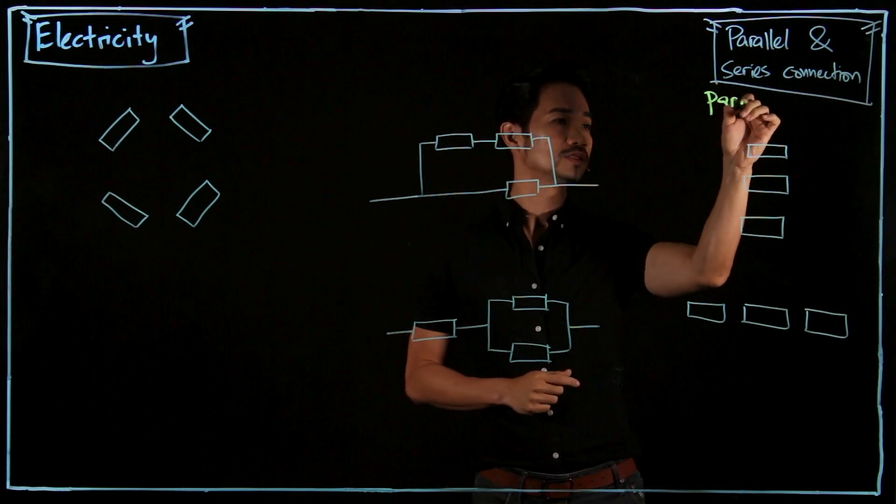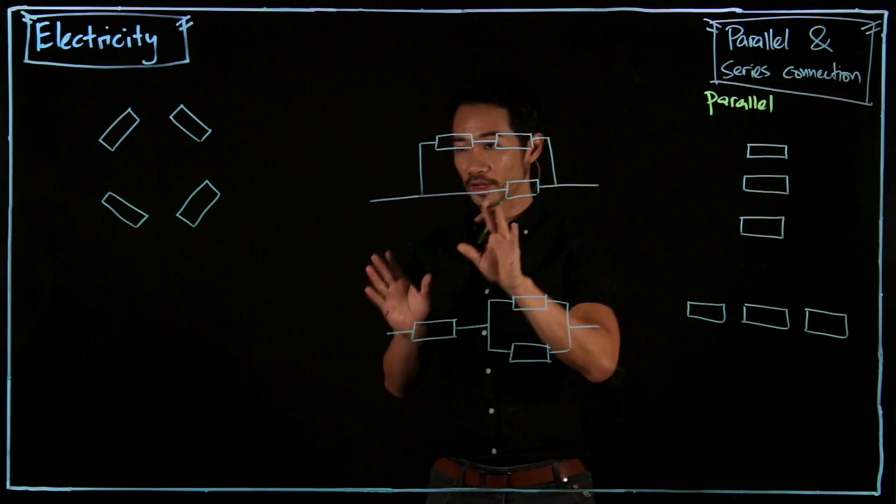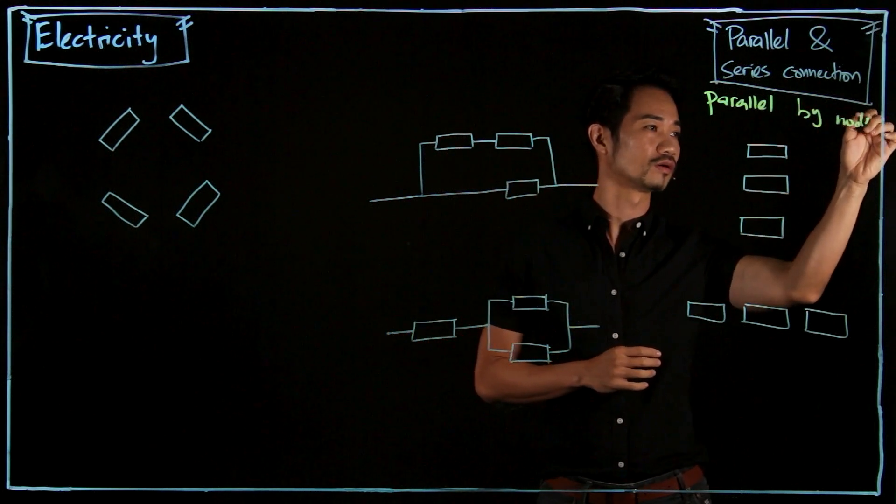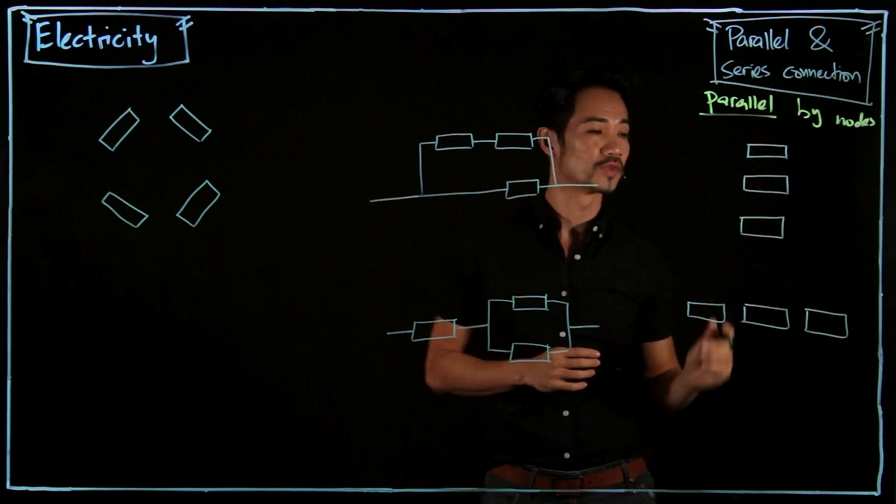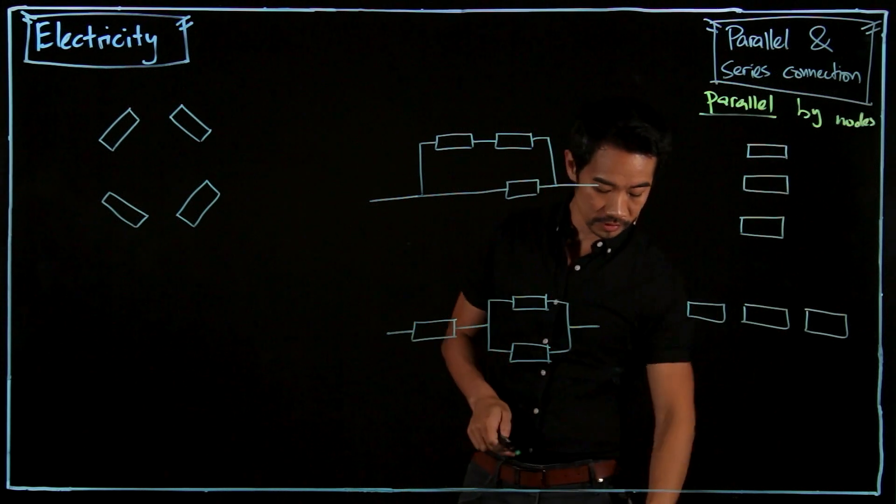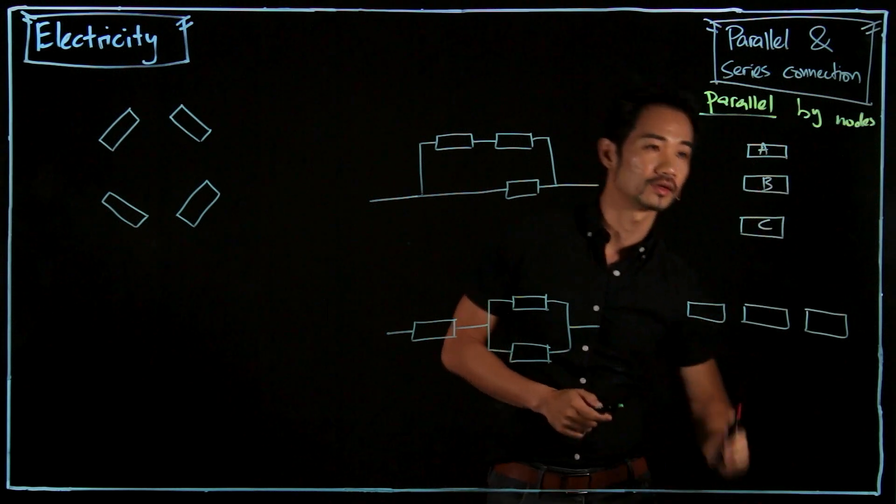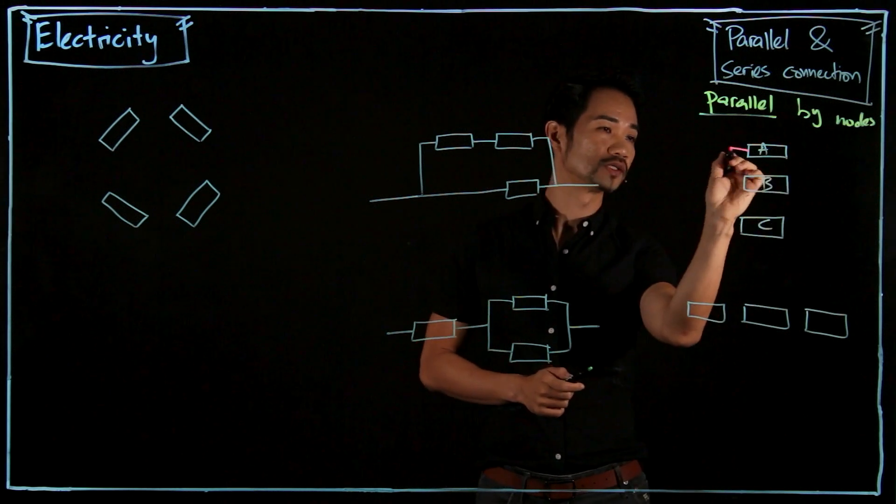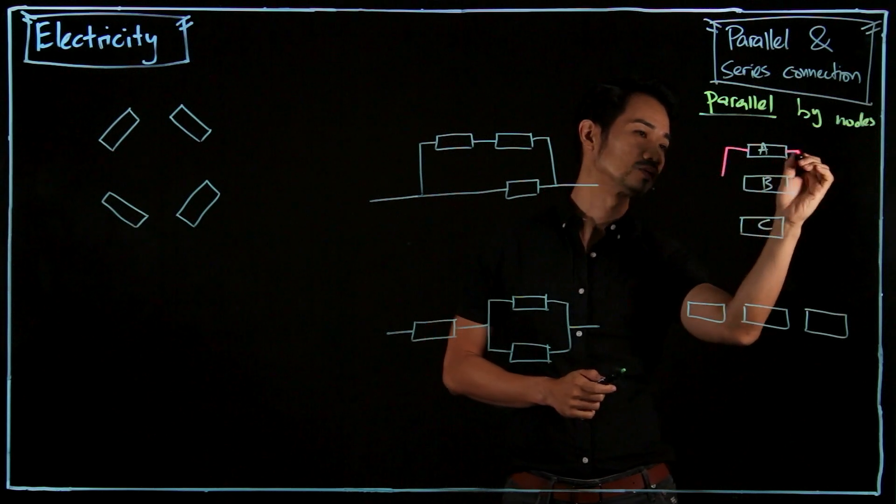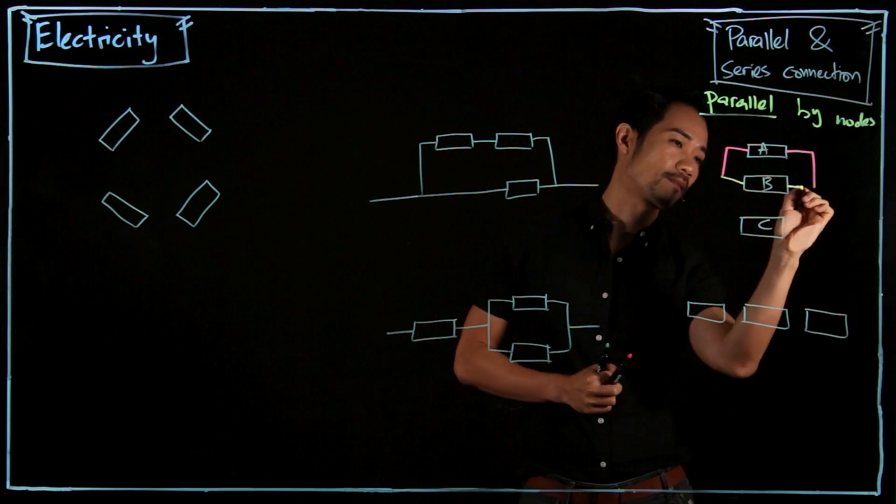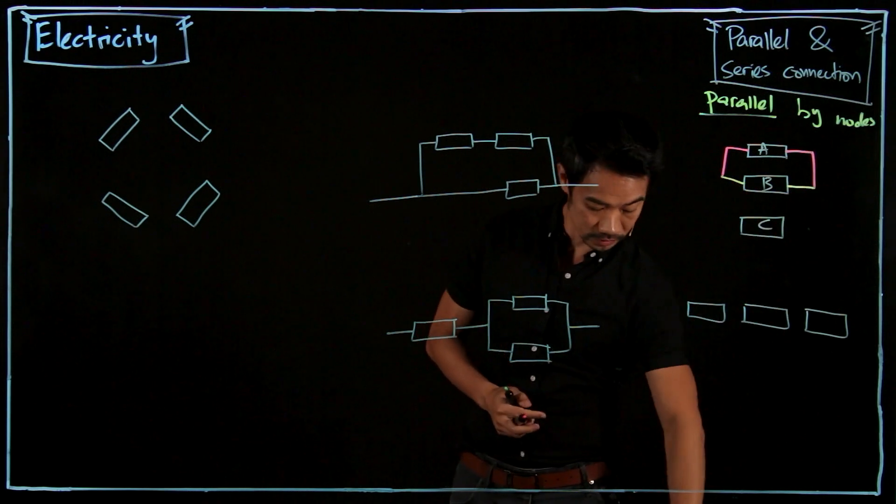Parallel means that the components are connected by nodes. Let me illustrate this. So if I have three resistors here, A, B and C. The first resistor is connected to the second resistor like this. And the third resistor...